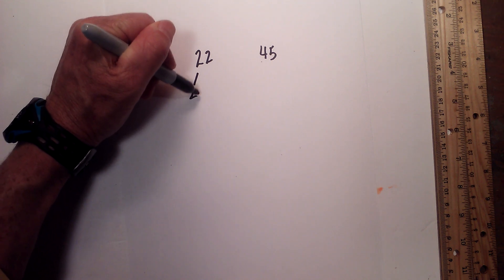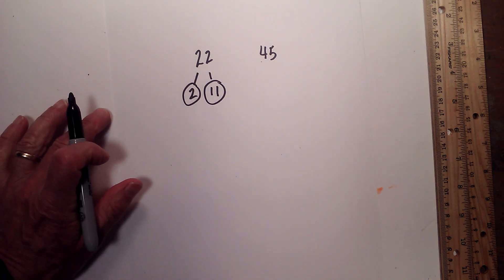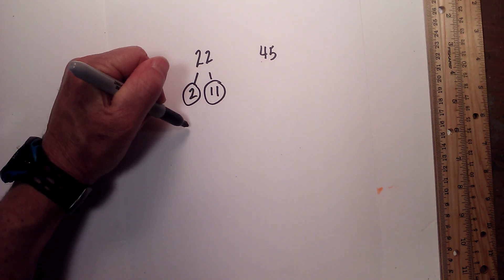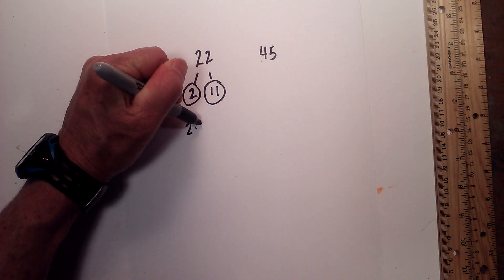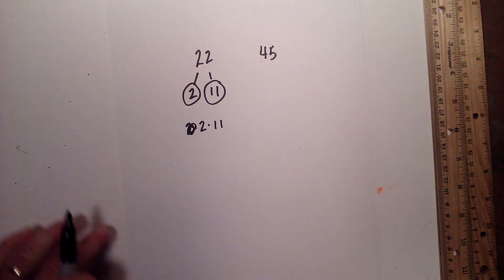22 is 2 times 11. I will circle both of these numbers because they are both prime. So the prime factorization of 22 is 2 times 11.